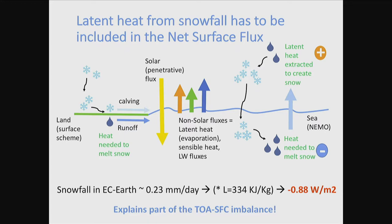Snowfall actually carries with it a latent heat content. It's quite easy to understand: the atmosphere creates snow by taking droplets, freezing them, and basically extracting heat by doing this. So the atmosphere is gaining heat. The snow falls into the ocean, and the ocean will use heat to melt it and bring it to SST. So basically the atmosphere has gained heat and the ocean has lost heat. Based on the average snowfall in the model - something around 0.23 mm/day - you multiply by 334 kJ/kg, and that's actually equivalent to minus 0.88 W/m². That's huge.